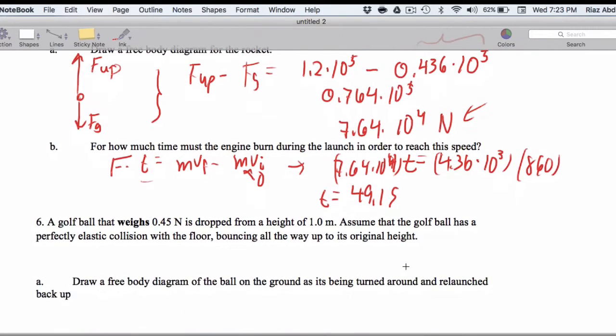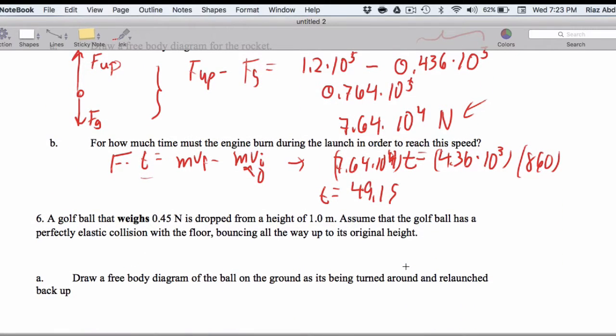All right. Now a golf ball that weighs 0.45 newtons. Whenever I give you that, don't even hesitate. So we know the weight is 0.45. So that the M is 1 tenth of that using weight equals MG. So I'm just going to isolate M here just to have it around.